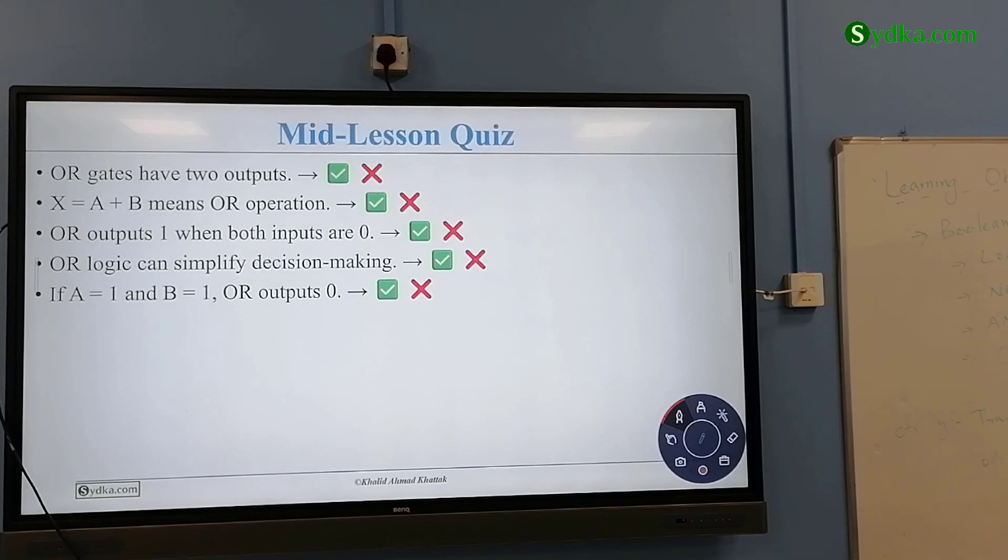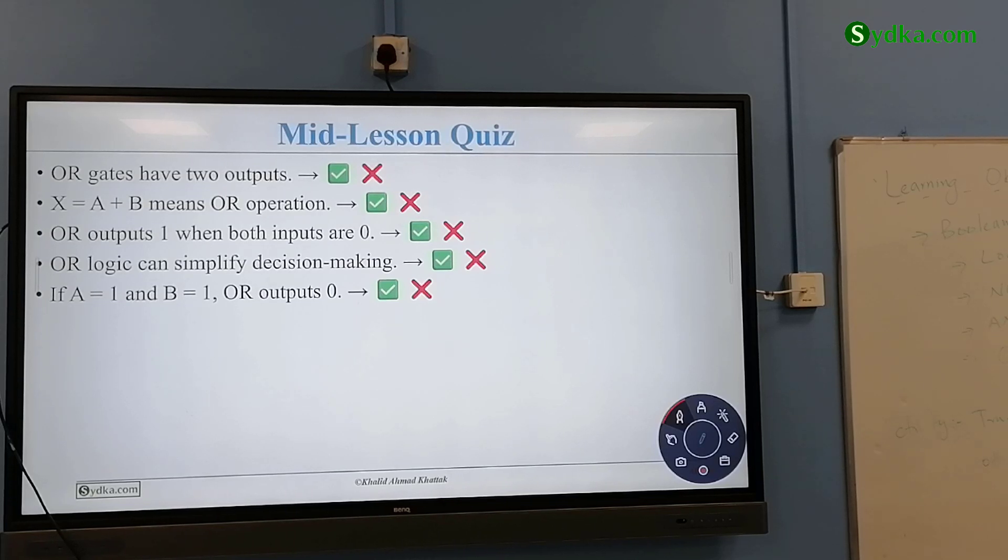OR gate has two outputs. First. OR gate is equal to 1, B is equal to 1, OR gate is equal to 1, OR gate is equal to 0. So false.